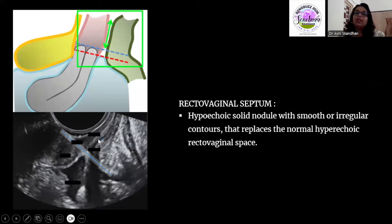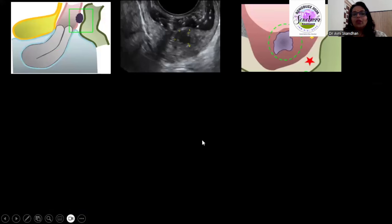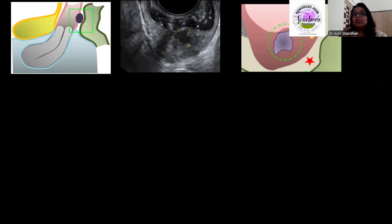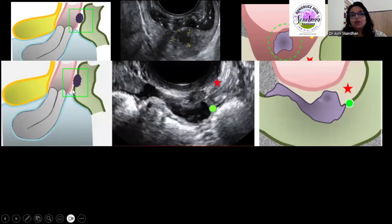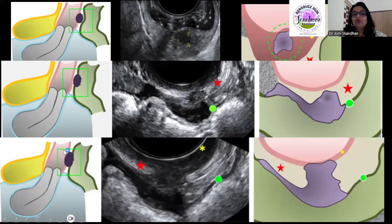The rectovaginal septum is something that can be easily missed, which is why our role is important in identifying deposits in this region. A deposit can arise from the posterior vaginal wall infiltrating into the rectovaginal septum. To better appreciate the vaginal wall, we can instill jelly or saline into the vaginal cavity to distend it. Alternatively, a deposit in the rectum can protrude into the rectovaginal septum, or you can see a through-and-through deposit from vaginal wall to rectum involving the rectovaginal septum.